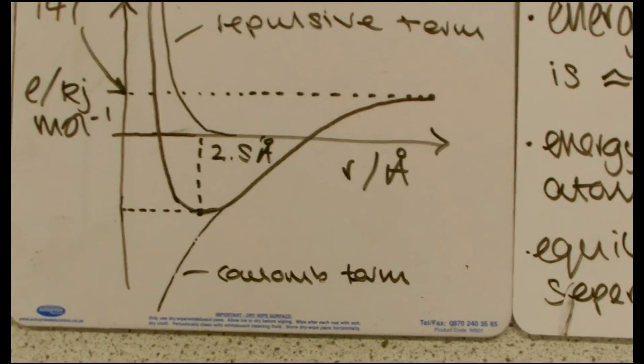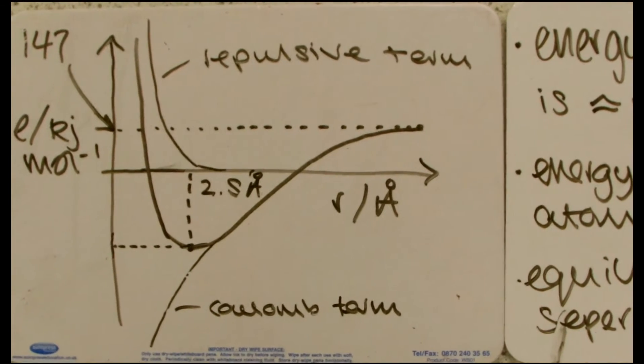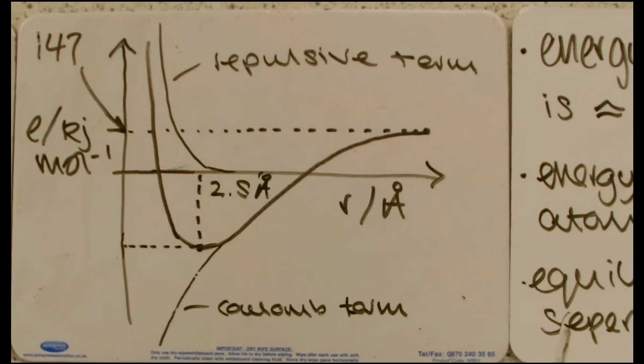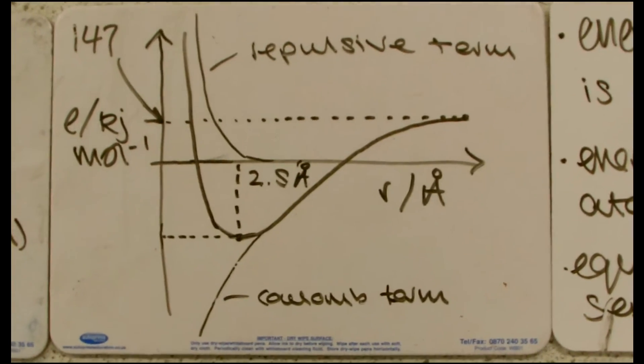we've got the Coulomb term down there, and we've got the repulsive term up there, you can see they make an equilibrium bond length. And this is going to be the lowest energy within the bond.